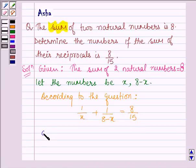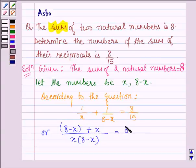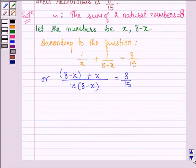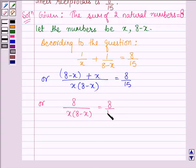Or we further have, in the numerator, (8-x) plus x over x(8-x) equals 8/15. Or we have 8 divided by x(8-x) equals 8/15.